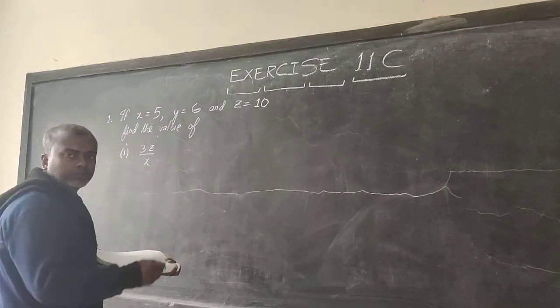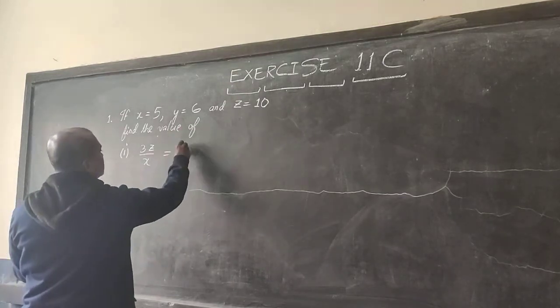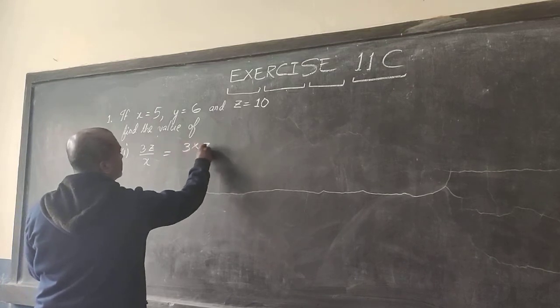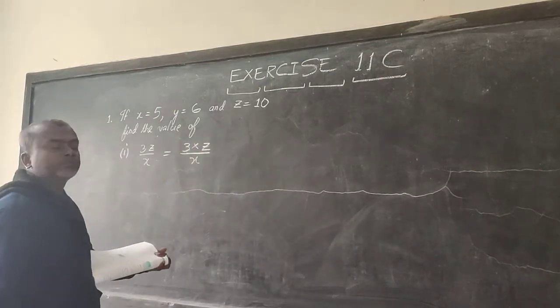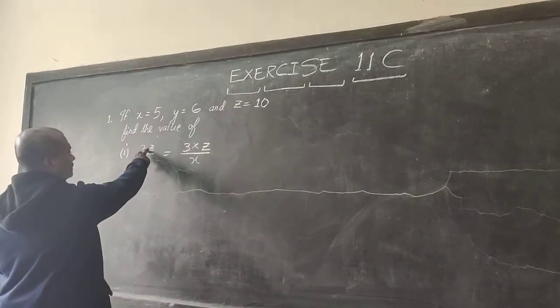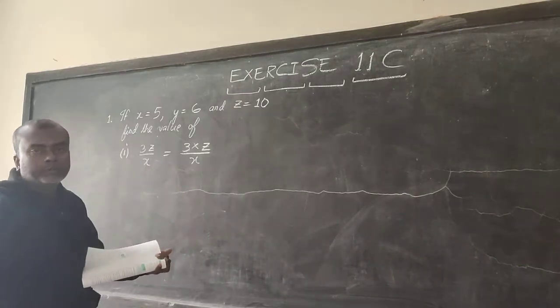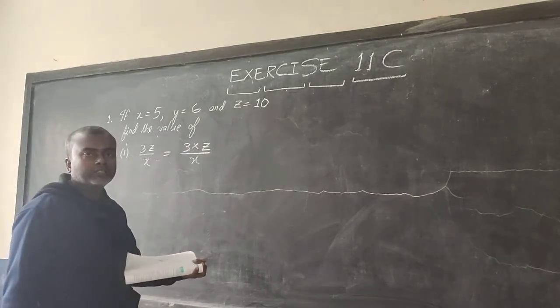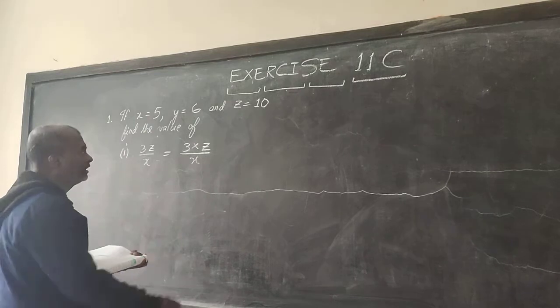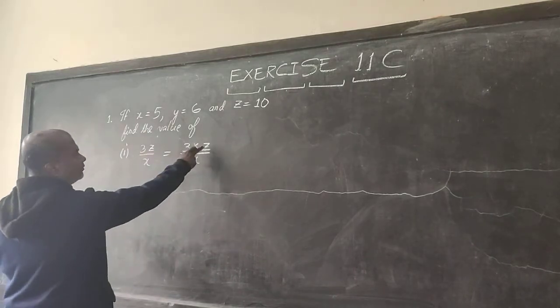This can even be written as 3 into Z divided by X. You know if there is no sign between a number or a variable or between any two variables, if no sign it is assumed that there is a multiplication sign. So 3Z means 3 into Z.